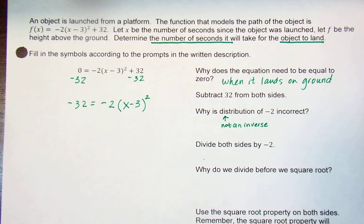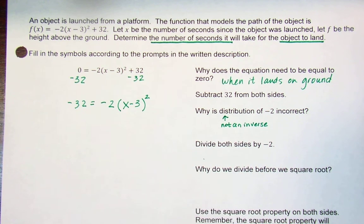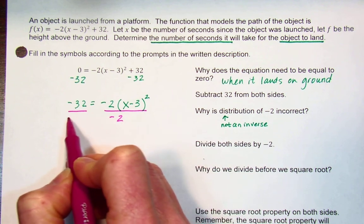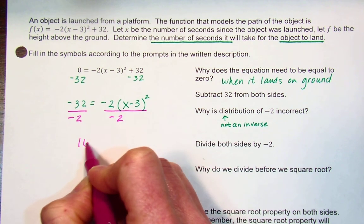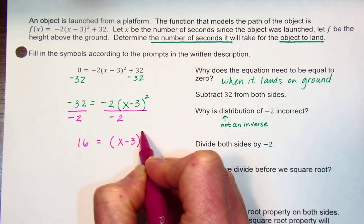Well, it tells us here: divide both sides by negative 2. Negative 32 divided by negative 2 is 16, and that leaves us with (x - 3)² on the right-hand side.